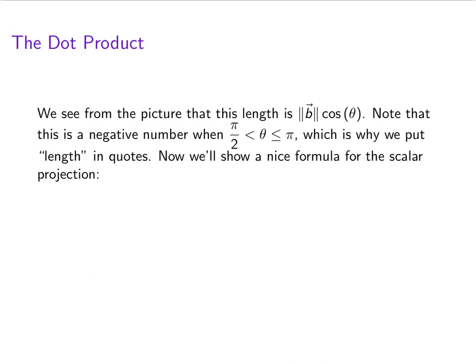Let's give a nice formula for the scalar projection. The scalar projection of B onto A is just ||B|| cos(θ). Multiply top and bottom by ||A||.